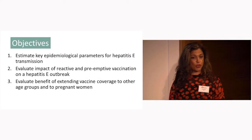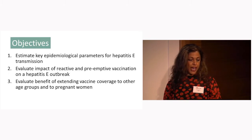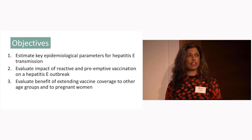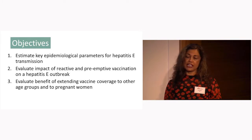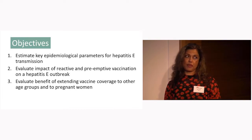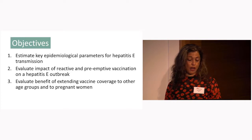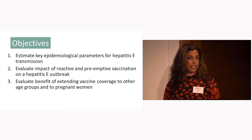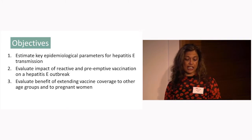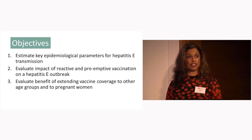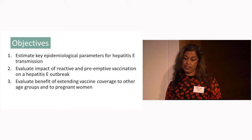So we decided to explore that through mathematical modeling: firstly by estimating key epidemiological parameters involved in transmission, such as the basic reproduction number, which indicates how many secondary cases would result from a single infected case. We then used these parameters to construct a model and evaluate the effect of the vaccine in an outbreak situation, and further evaluated the benefit of extending the vaccine to pregnant women and younger and older age groups, which the vaccine is not currently licensed for.